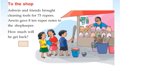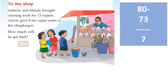At the shop, Ashwin and his friends bought cleaning tools for 73 rupees. 8 ten-rupee notes were given to the shopkeeper — that is 80 rupees. How much change will he get back? 80 minus 73. The answer is 7 rupees.